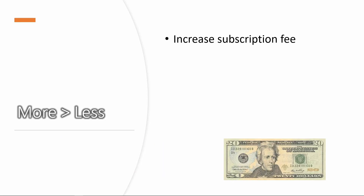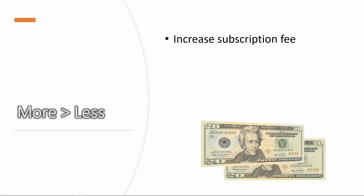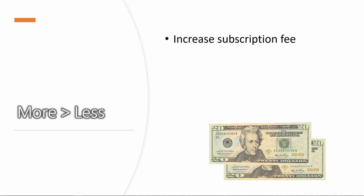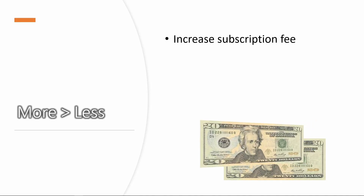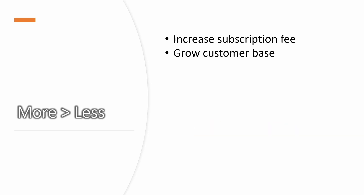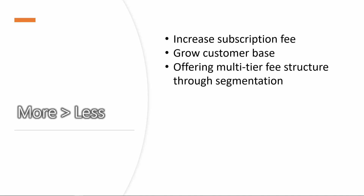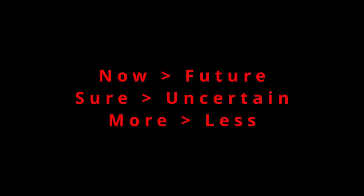The third component is more is better than less. If we increase the subscription fee, customers pay us more each period, increasing CLV. We can also grow the customer base to increase total CLV, and we may improve pricing by offering a multi-tier fee structure through segmentation — which we will discuss in the coming weeks. To summarize, the three components of CLV are: now is better than the future, sure is better than uncertain, and more is better than less.